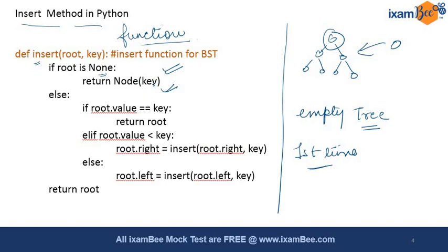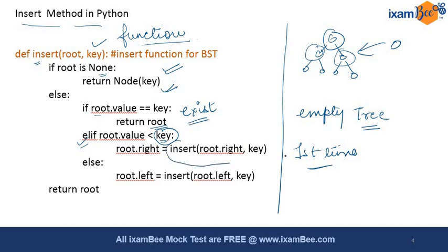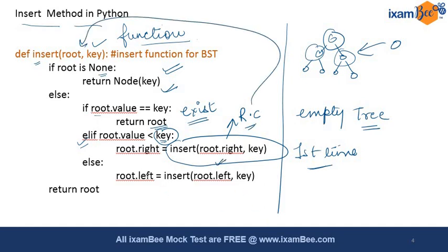We check whether the root value equals the key we want to insert. If it is equal, it means the value already exists — we drop it to avoid redundancy and do not insert it again. But if the root value is less than the key, meaning the incoming value is greater, we insert it on the right-hand side with a recursive call to the insert function with the right child. Otherwise, we insert it into the left subtree recursively until the insertion is complete.